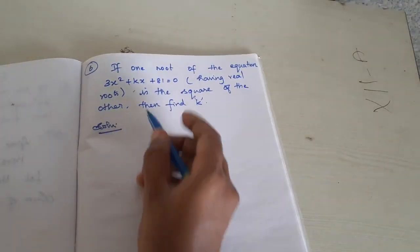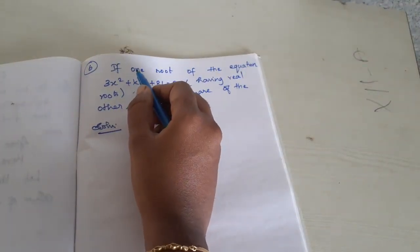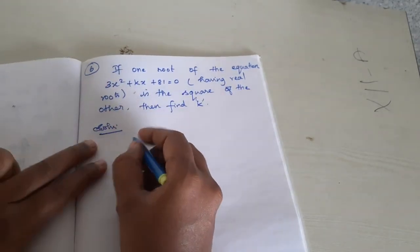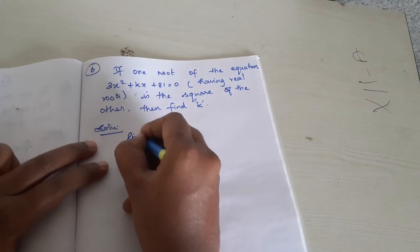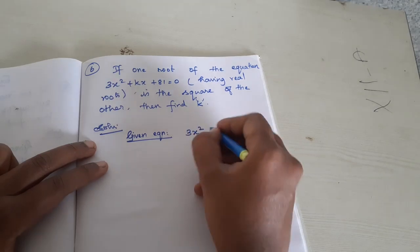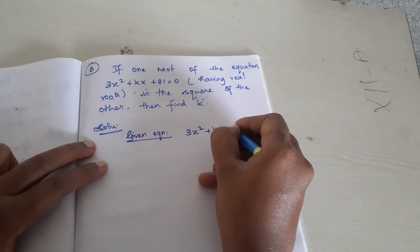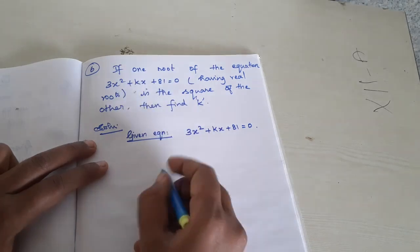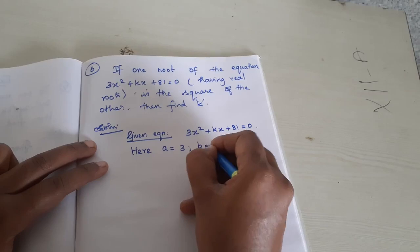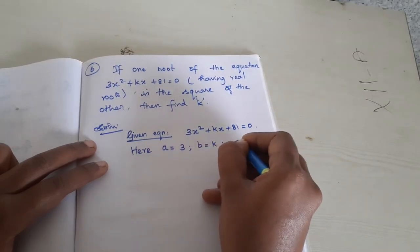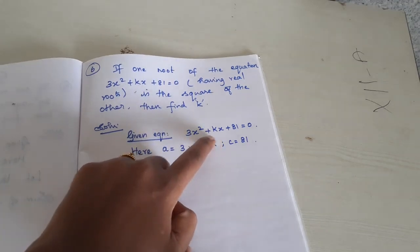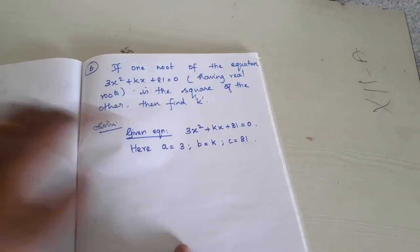Question number 6 — the last question in Exercise 3.14. The given equation is 3x² plus kx plus 81 equals 0. The values are: a equals 3, b equals k, c equals 81. Here a is the coefficient of x squared, b is the coefficient of x, and c is the constant term.